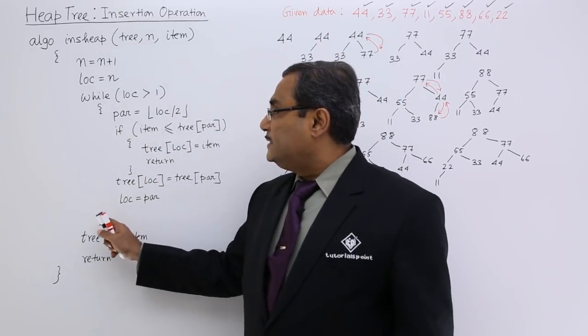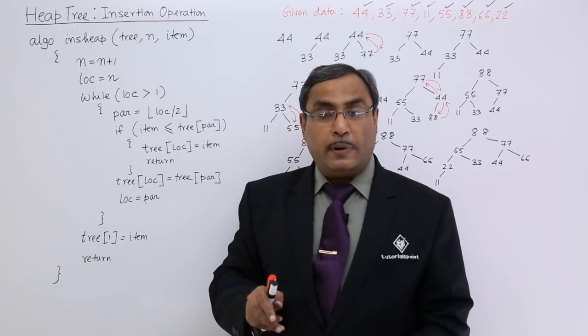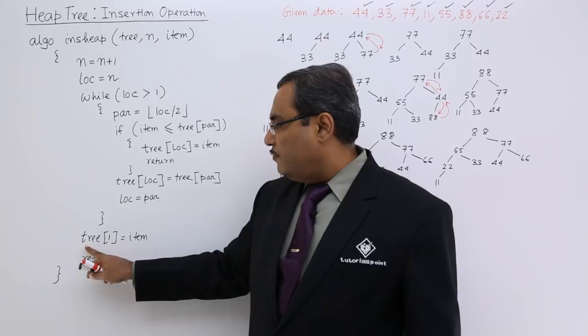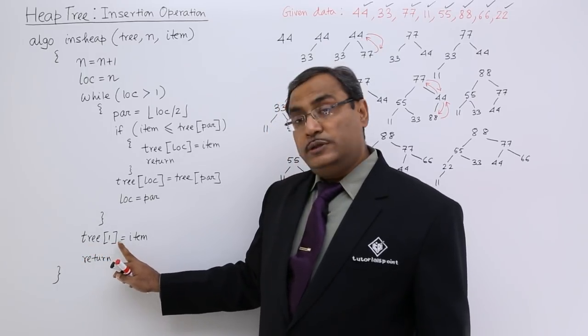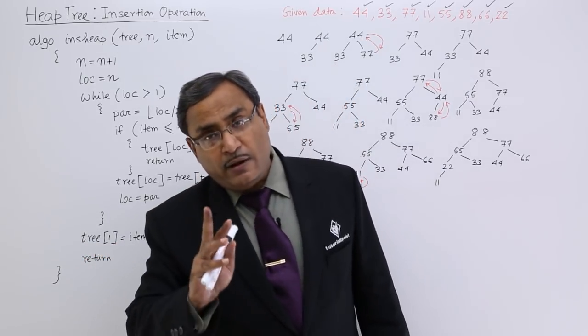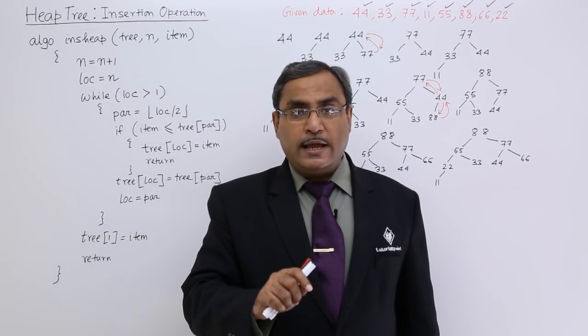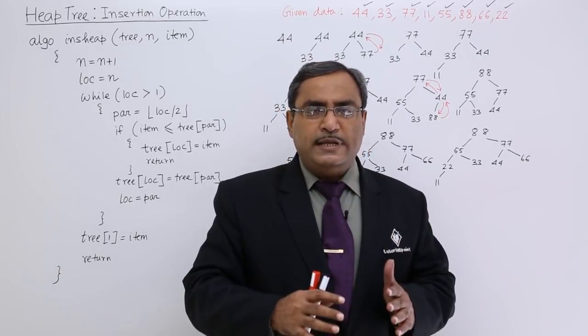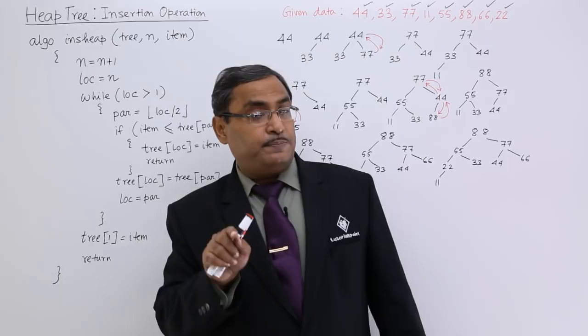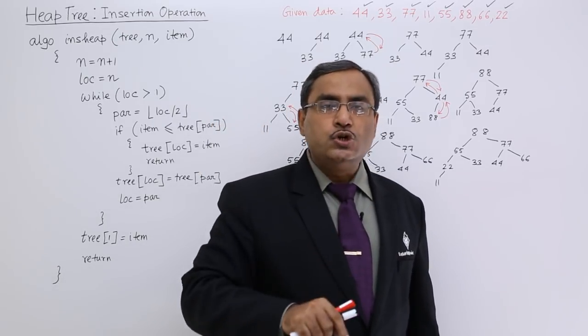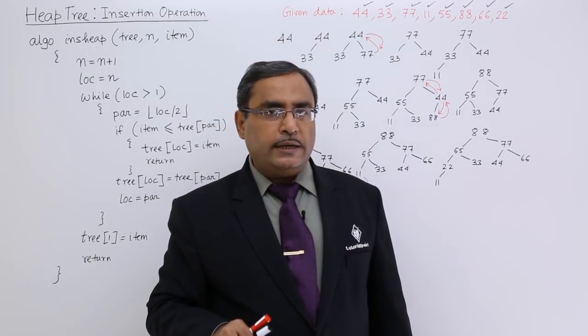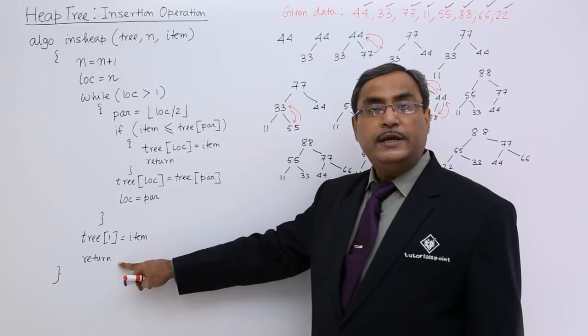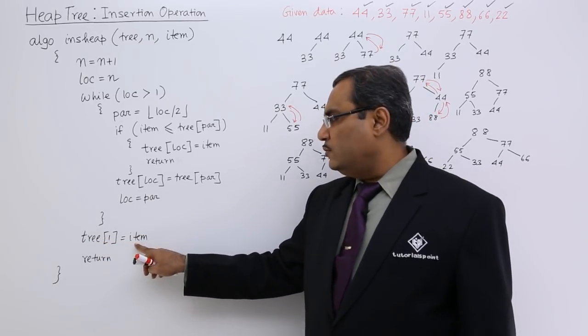This while body will be executing when lock is greater than 1. But when the lock will be equal to 1 then it will come out from the while body and tree 1 is equal to item and return. This line will be executed if and only if the item which is going to be inserted is maximum, is greater than all the values pre-existing in the heap tree. Then this particular item will be found at the root node of the complete binary tree, otherwise from here it can return. But if it is not possible then it can return from here also. Tree 1 is equal to item and return.